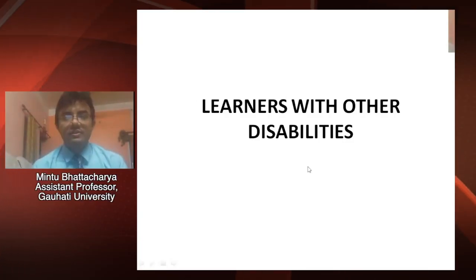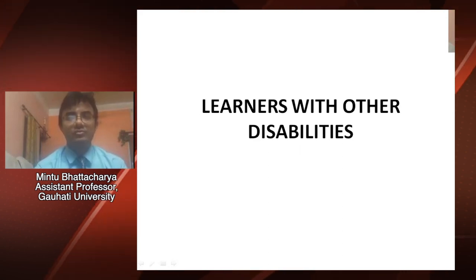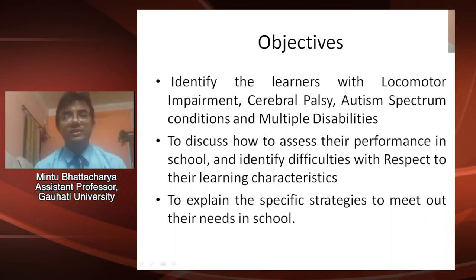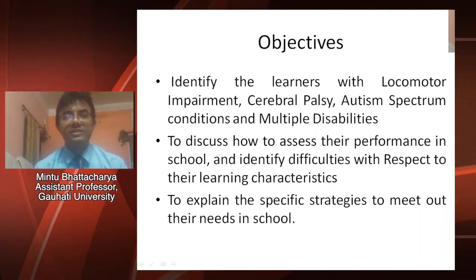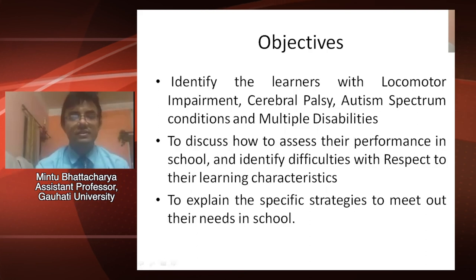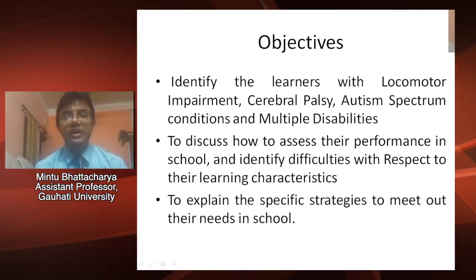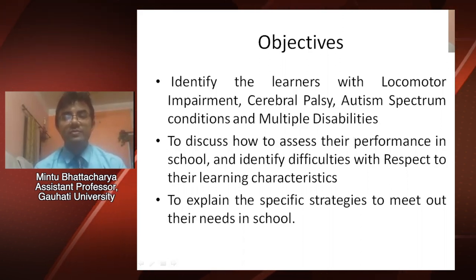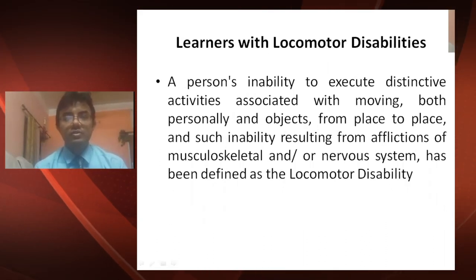Dear students, now we will be discussing about learners with other disabilities. This is your last unit, Unit Four. The objectives of this unit are to identify the learners with locomotor impairment, cerebral palsy, autism spectrum conditions, and multiple disabilities; secondly, to discuss how to assess their performance in school and to identify difficulties with respect to their learning characteristics; and lastly, to explain the specific strategies to meet their needs.